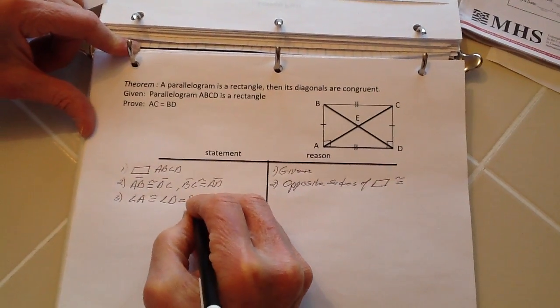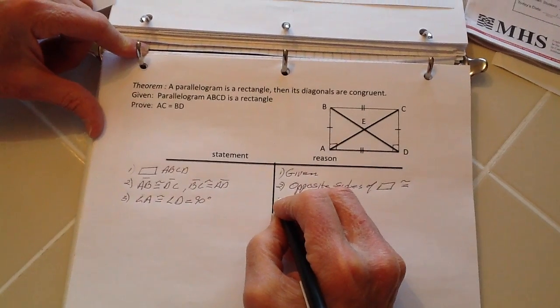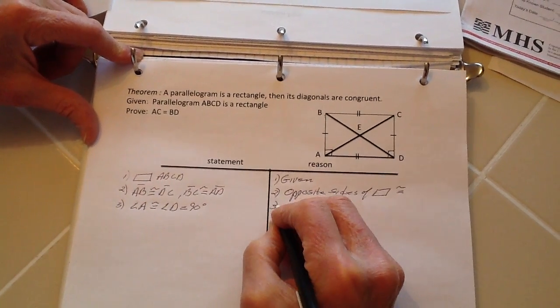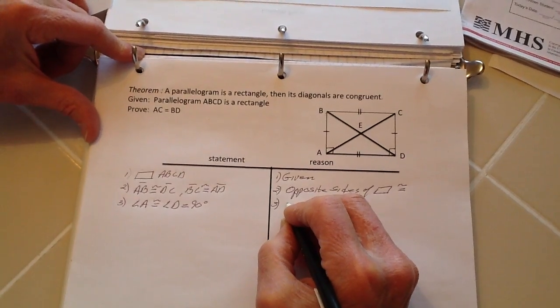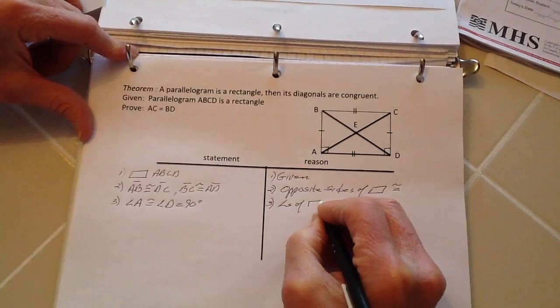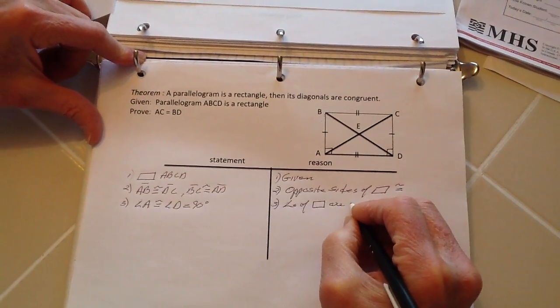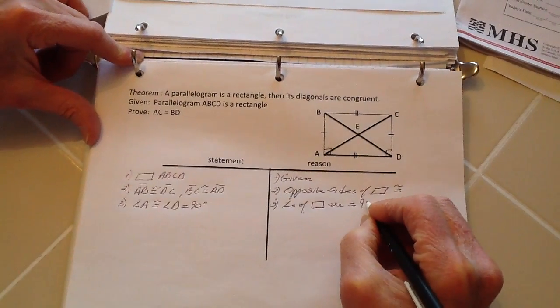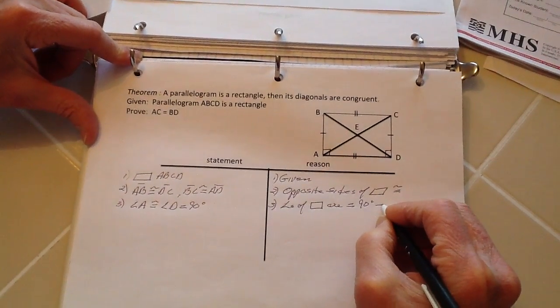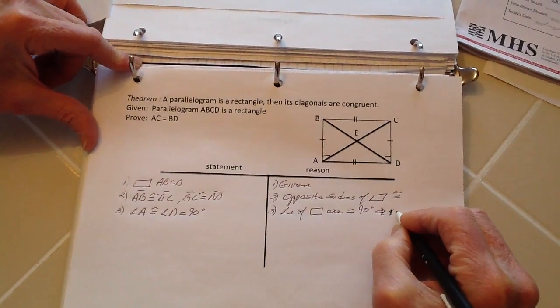So I'm going to put down here angle A is congruent to angle D, and so forth, because we know they both equal 90 degrees. And so I can say on this right here is three: I know that the angles of a rectangle are equal to 90 degrees, and therefore they are congruent.